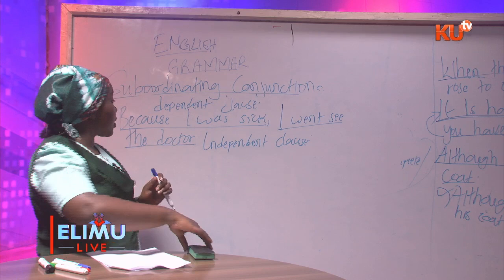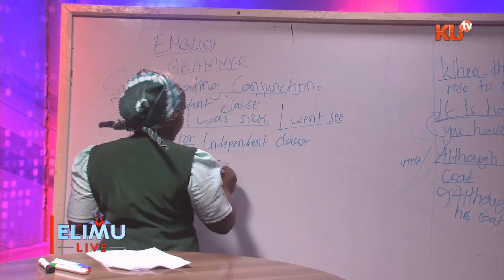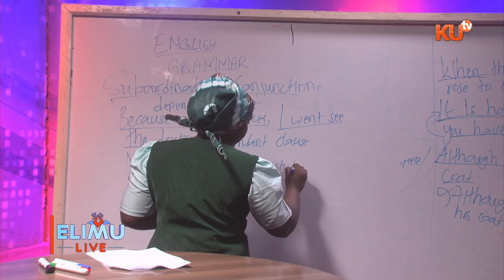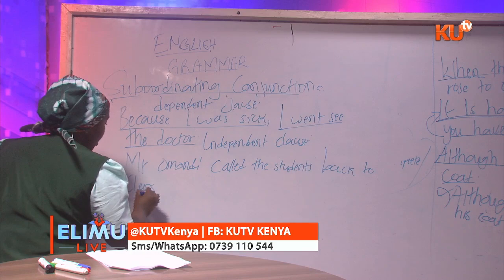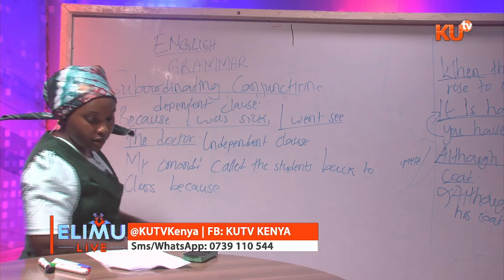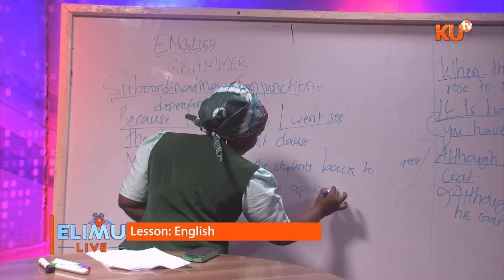Another example: 'Mr. Omondi called the students back to class because they were apologetic.' In such a case, maybe the students had wronged the teacher, and the teacher decided to call them back to class once they apologized.